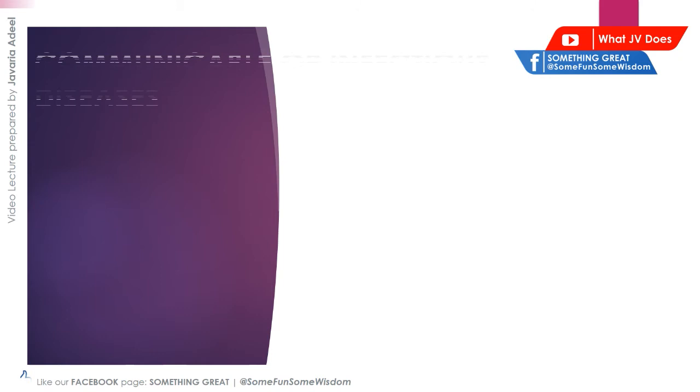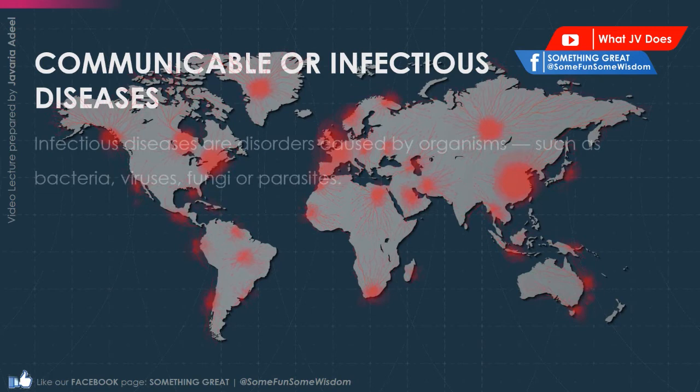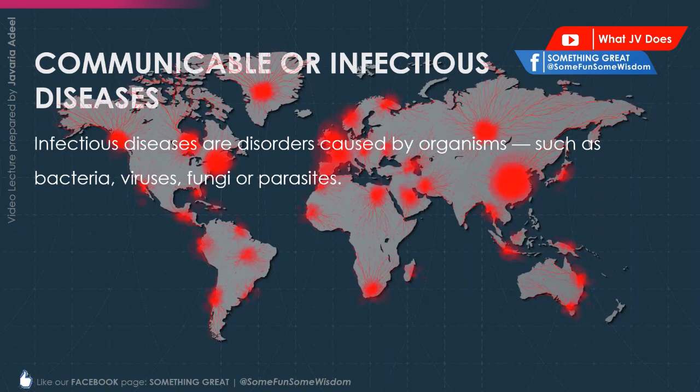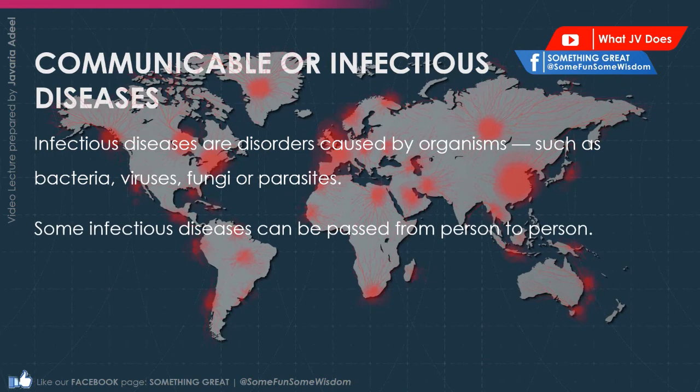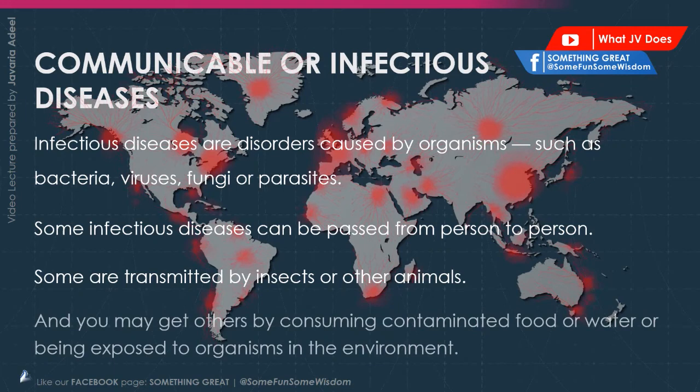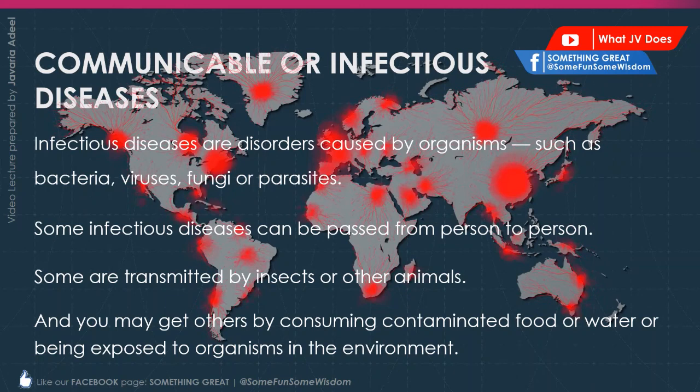Let's move on towards the third type: communicable or infectious diseases. Infectious diseases are disorders caused by various organisms such as bacteria, viruses, fungi, and parasites. Some infectious diseases can be passed from person to person, like COVID-19. Some are transmitted by insects or other animals, and you may get other diseases by consuming contaminated food or water, or being exposed to organisms in the environment. Usually parasites and protozoans cause such diseases.